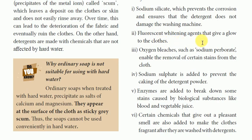Fluorescent — a whitening agent that gives glow to the cloth. We add a whitening agent to make the cloth glitter. We also use oxygen bleachers such as sodium perborate, which will enable the removal of certain stains from the cloth. Sodium perborate is a chemical compound used as an oxygen bleacher to remove stains.